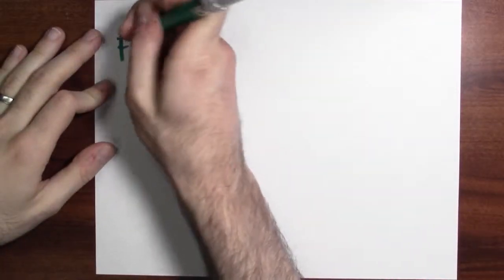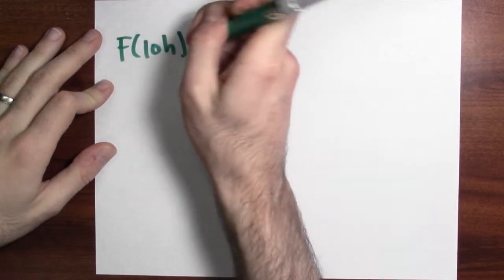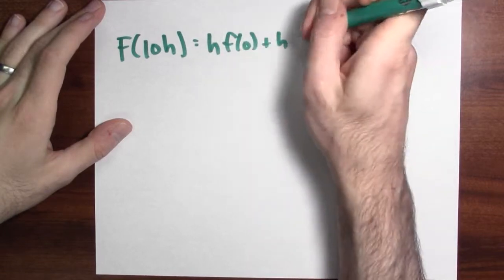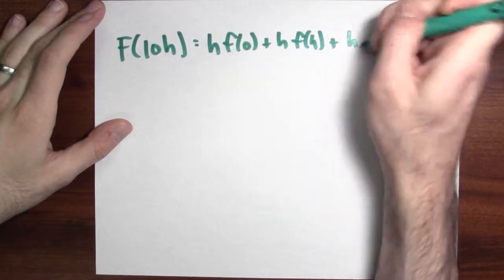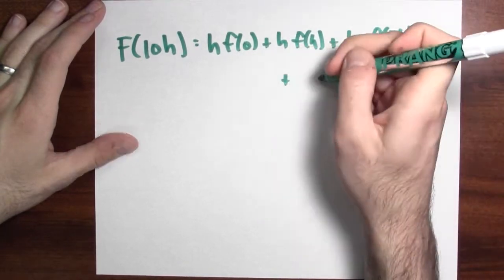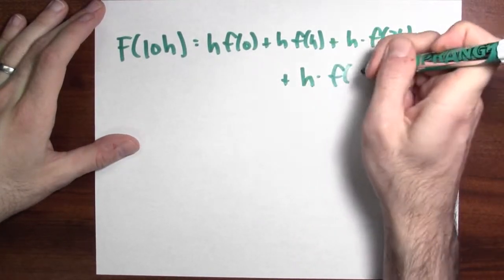I want to approximate big F at 10h, right? I'd just be repeating this process. It'll be h times f of 0 plus h times f of h plus h times f of 2h, and it'll keep on going until I get to h times f of 9h.